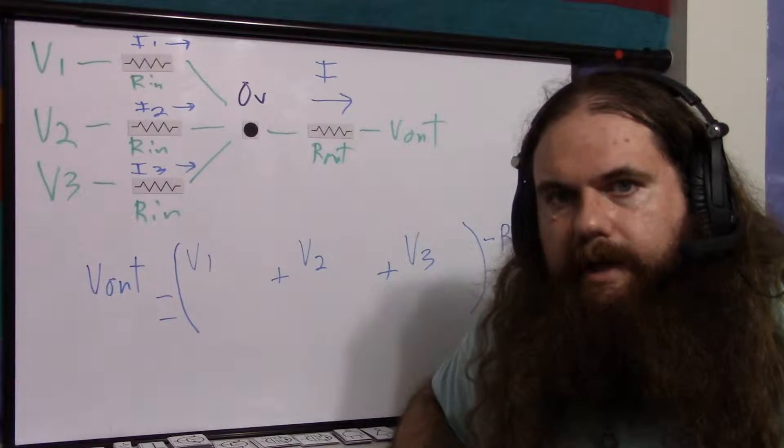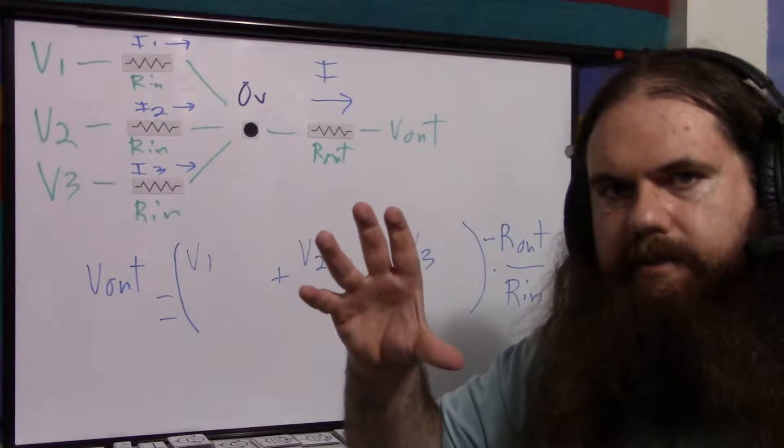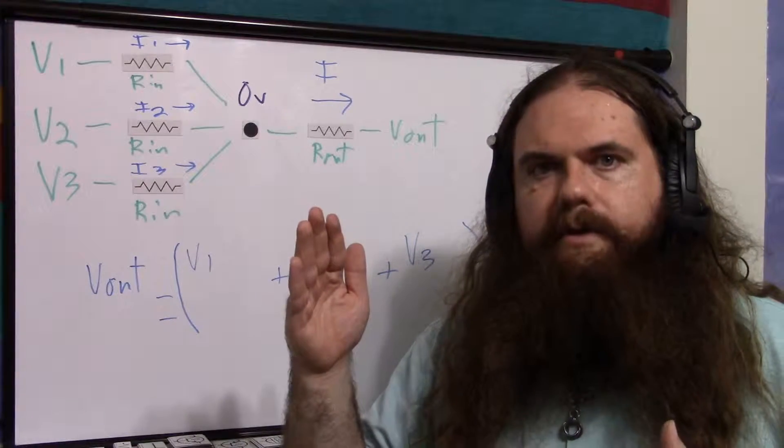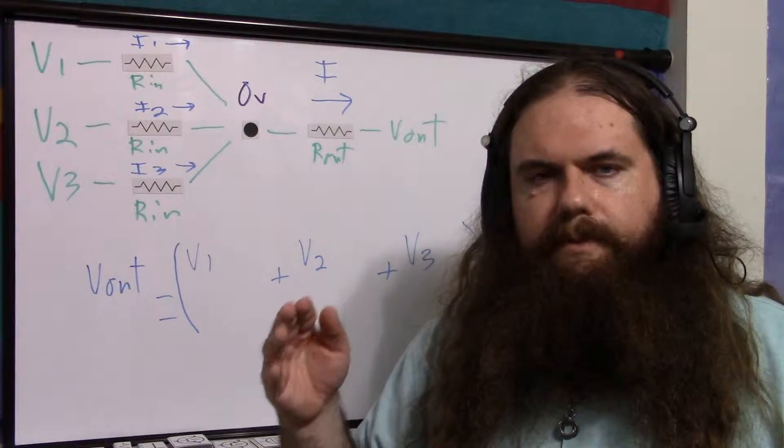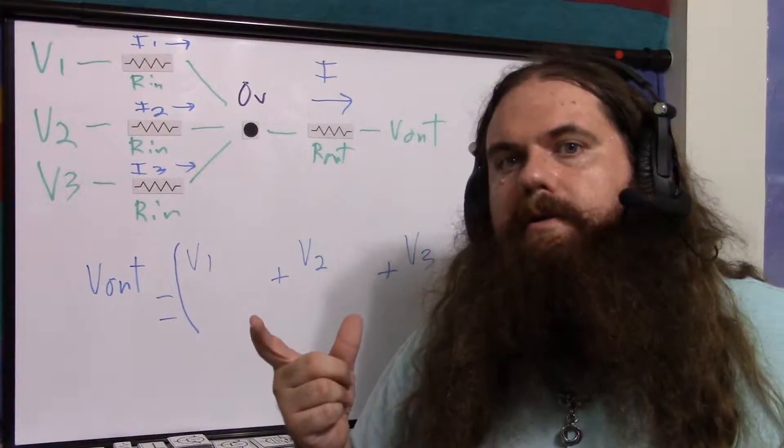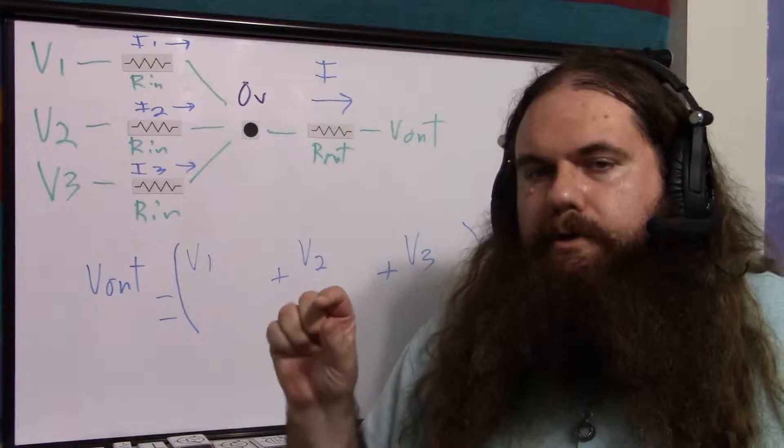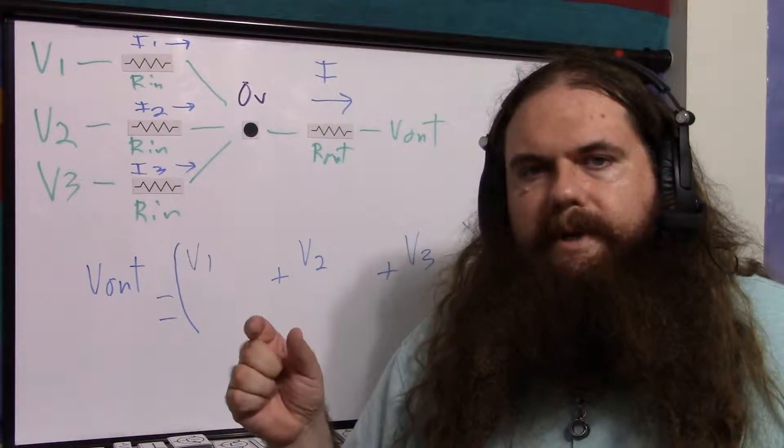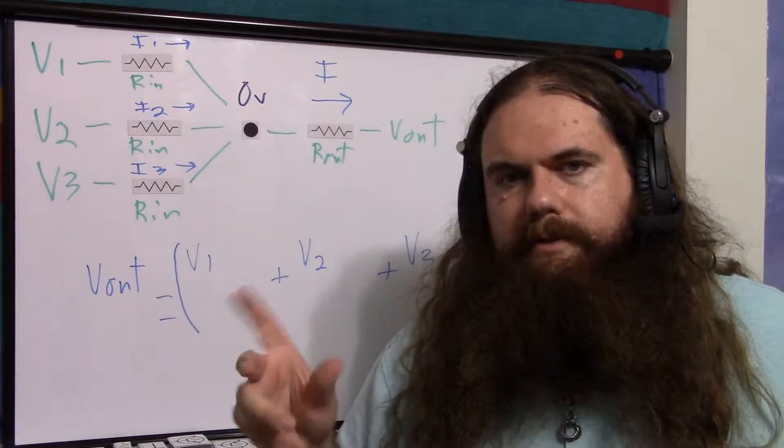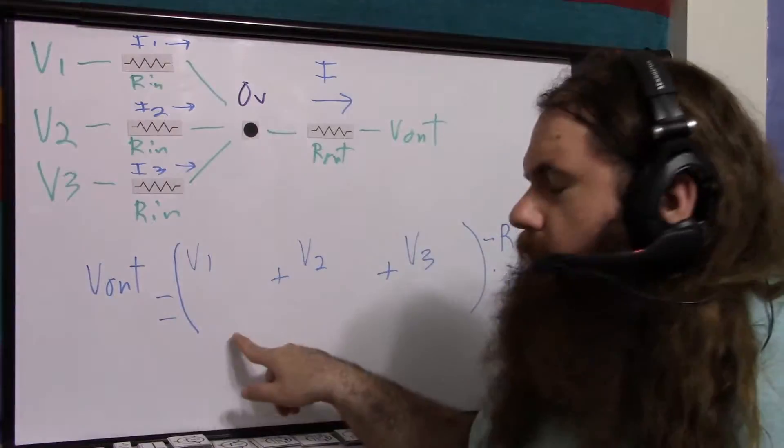So how do you pick your gain? Well, you could say, what is the highest any of these voltages will be? What is the maximum sum? And then you say, okay, the maximum output I want is going to be whatever. So that's the gain you apply. Like if you have, let's say the sum can only ever be plus or minus three. So you want a maximum of six volts out, plus or minus six. So you multiply your gain would be two. Because if the voltages are their maximum, plus or minus three times two would be plus or minus six.